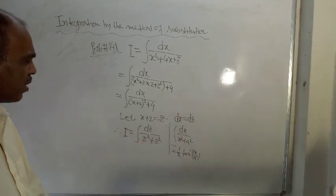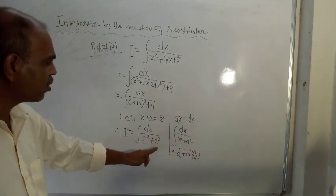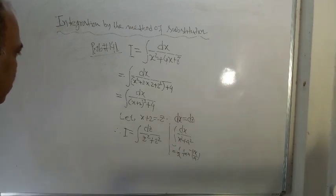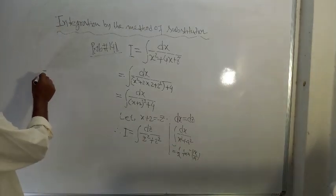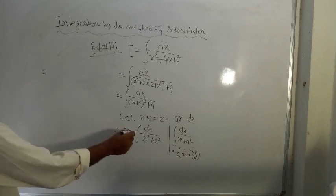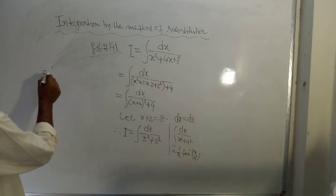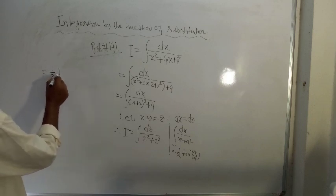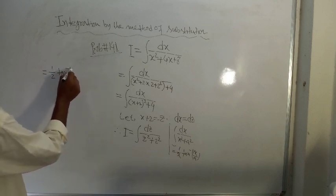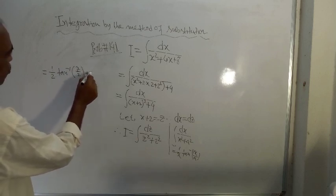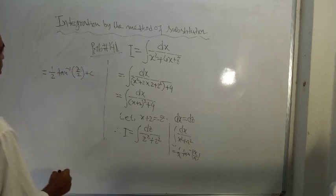So form is here similar. Here instead of a, 2 is there. a is a constant, 2 is also a constant. So there is no difference at all. So the result is the next line. This is equal to 1 by a means 1 by 2 tan inverse z by 2 plus a constant of integration c.